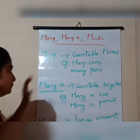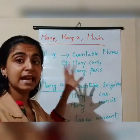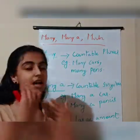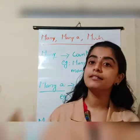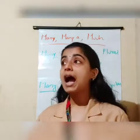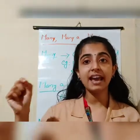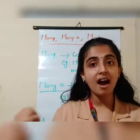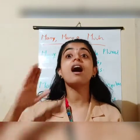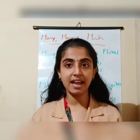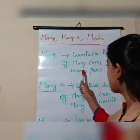Starting with many. The word many is used when the sentence has a countable plural noun. For example, suppose I am saying: I have many cars. That is correct. Why? Because cars is the noun there, and cars are countable — I can count the cars — and it is plural, more than one. So I can say: I have many cars.